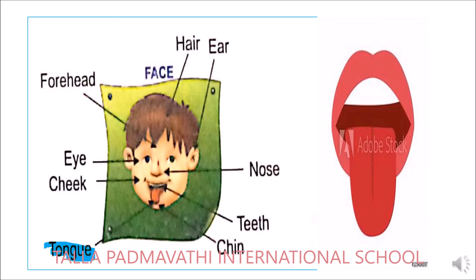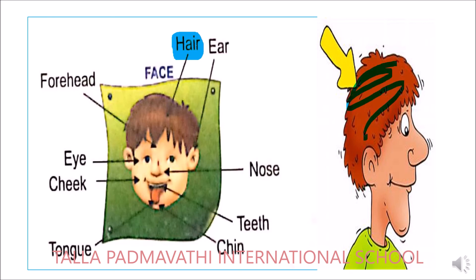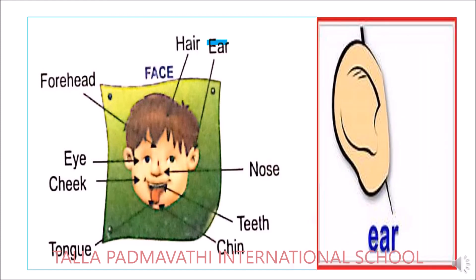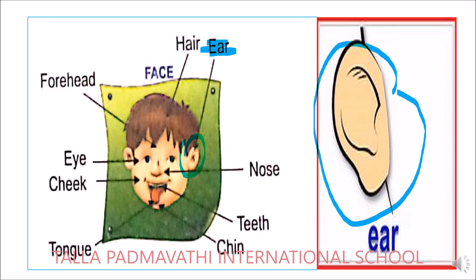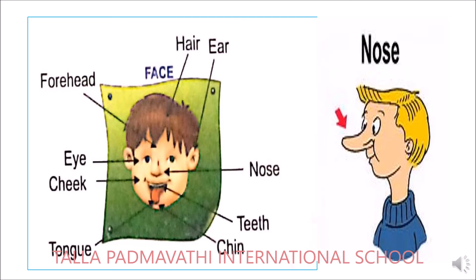Next is tongue — are you able to see the tongue over here? It is present inside our mouth. Next is hair — these are the hairs. Next it comes for ear — this part which is present over here is your ear. What is the use of the ear? The ear is used for hearing. Next it comes for nose. What is the use of the nose? Nose helps us in breathing, and we can also smell good or bad smells with the help of our nose. Now touch your nose.